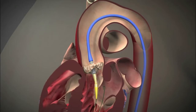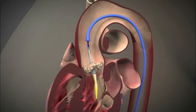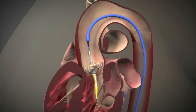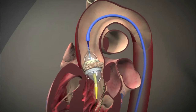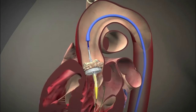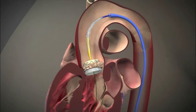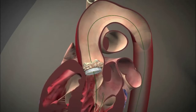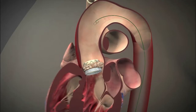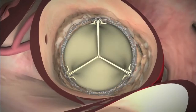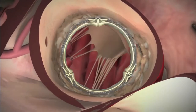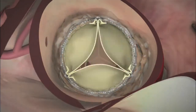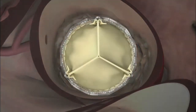The new valve, which has been tightly compressed up to this point, is ballooned open, pushing diseased leaflets out of the way and leaving a new, functioning aortic valve inside of the original valve. The wire is then removed. Here you can see the leaflets of the aortic valve opening and closing, restoring normal blood flow through the valve.